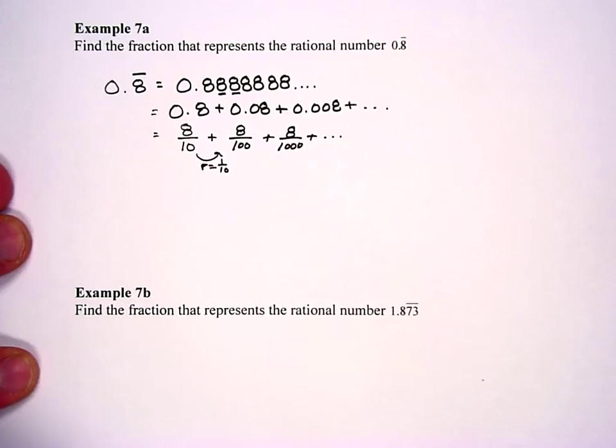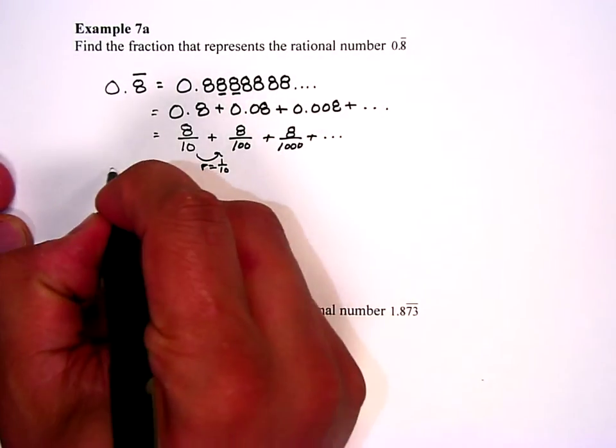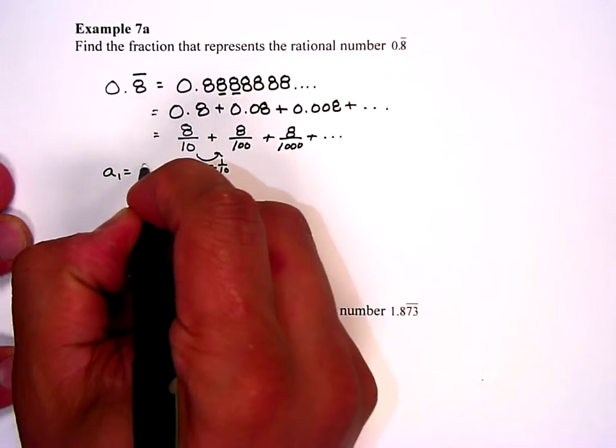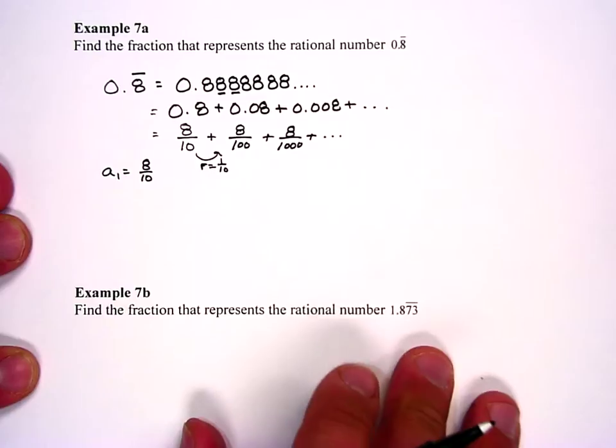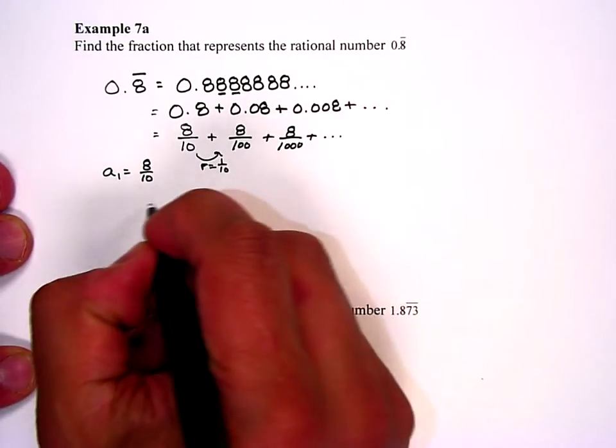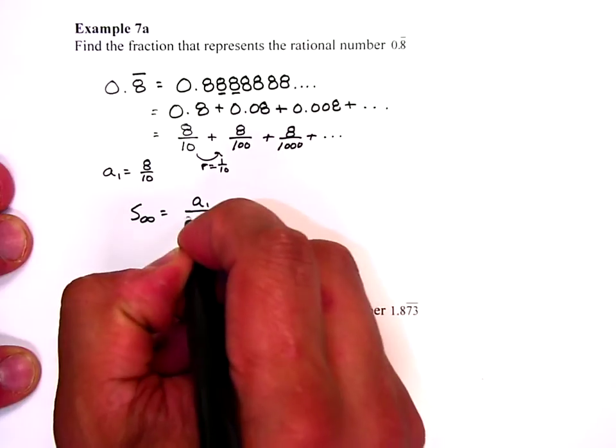And so I need to add all these terms up. Well nicely I have a formula for that. A sub 1 is eight tenths. R is one tenth. And so my formula was S sub infinity equals A sub 1 over 1 minus R.